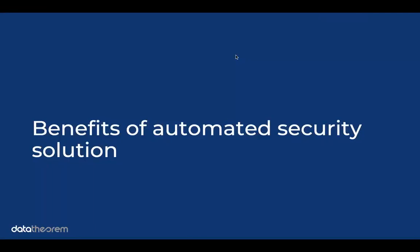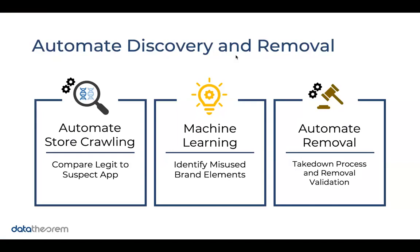Let's talk about the benefits of an automated security approach. First, you need to automate discovery — automated crawlers that go out and scan hundreds of stores looking for counterfeit apps, then compare suspects to your legitimate app. For clones, this is easier since you have a known binary, icon, and so forth to compare against. For brand abuse cases it's much harder, because the fake app is completely fabricated from the start, so you need advanced machine learning techniques including image analysis to identify brand elements being misused.